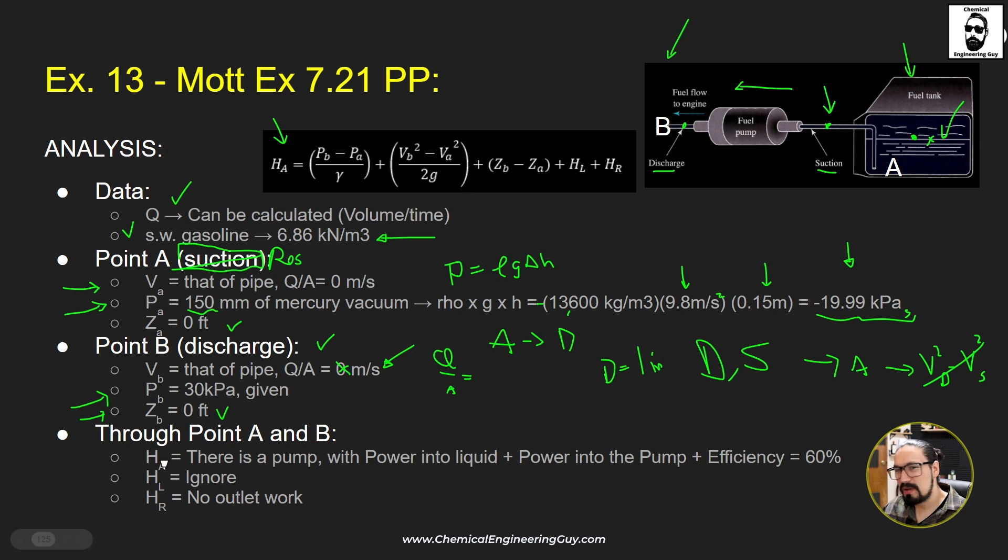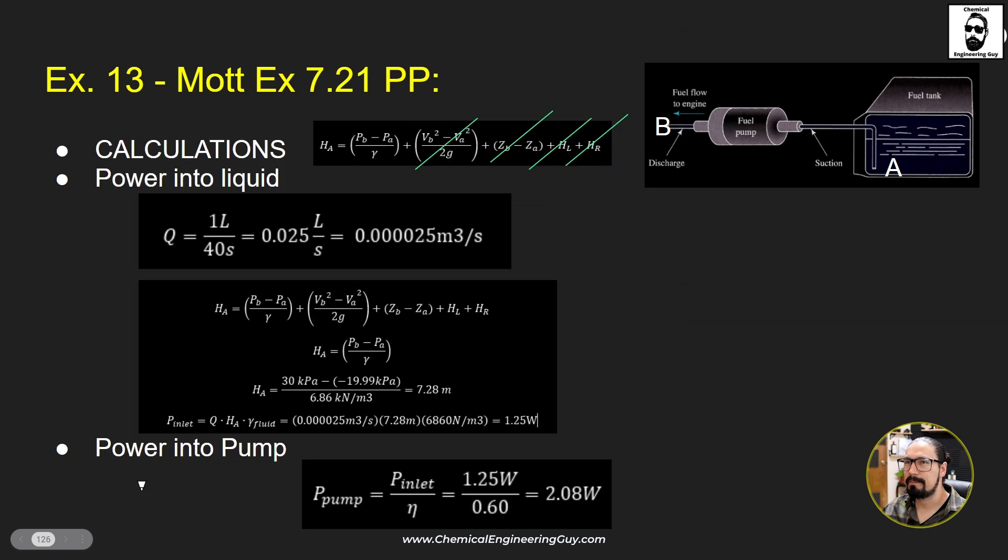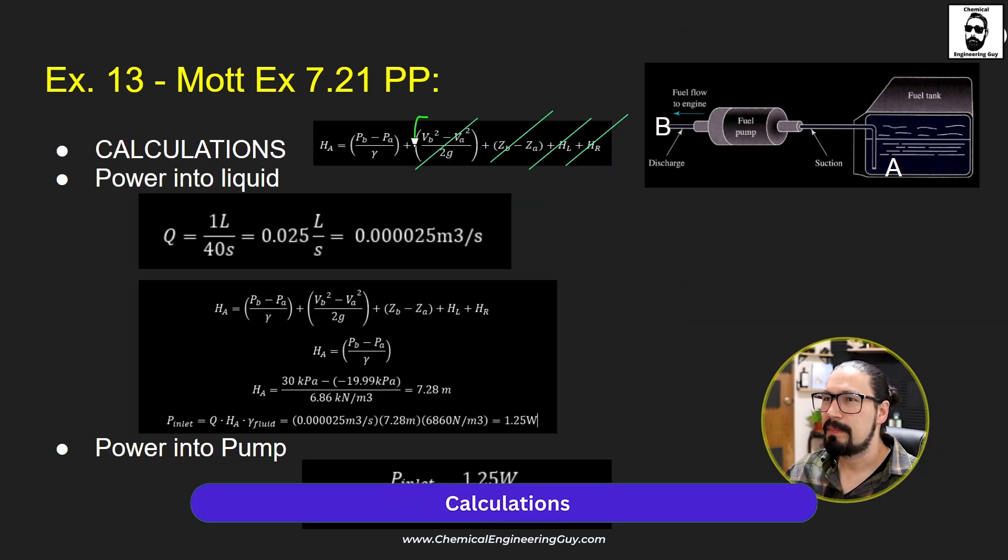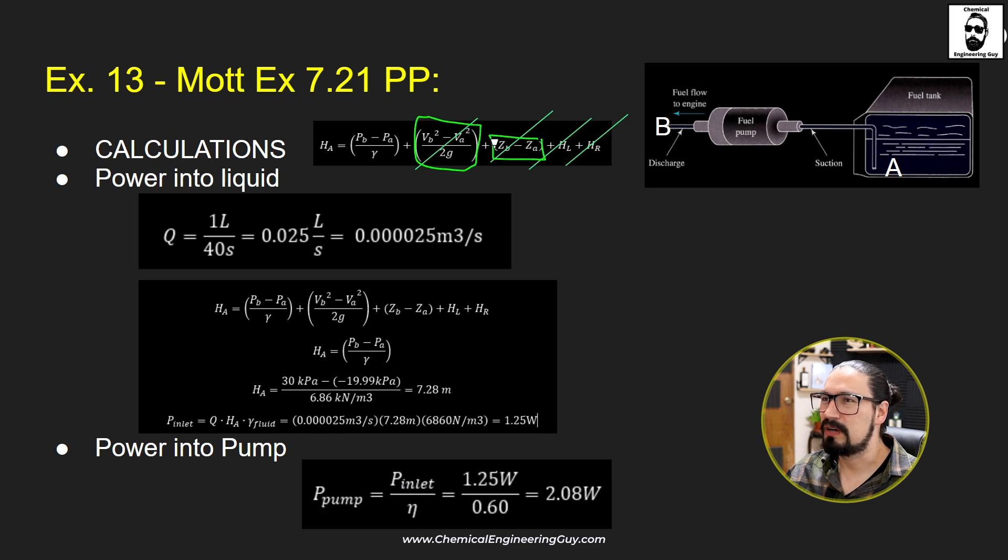Now, through point A and B, we got a pump with an efficiency. We have no requirements for energy losses or outlet work. So, calculations are going to be simplified. I'm going to ignore the velocity head. I'm going to ignore the position or elevation head. I'm going to cancel friction losses and removal. So, I end up with this value or this equation for the pump head.